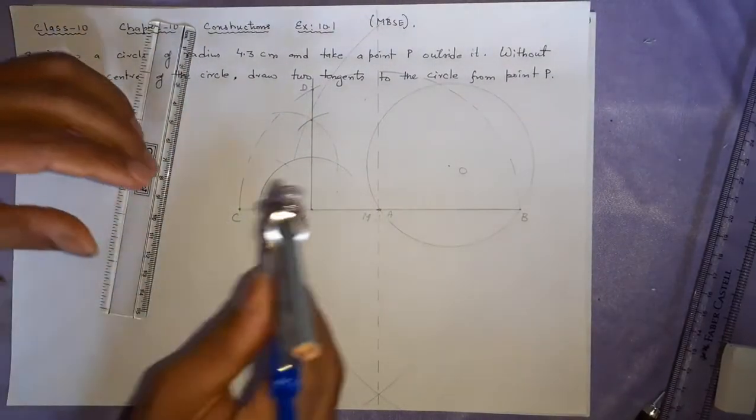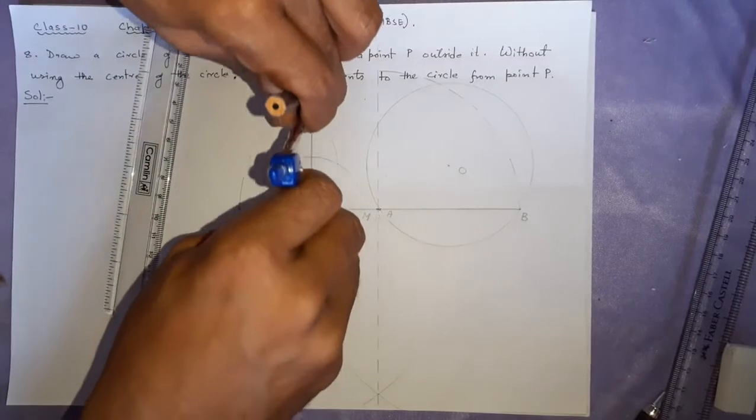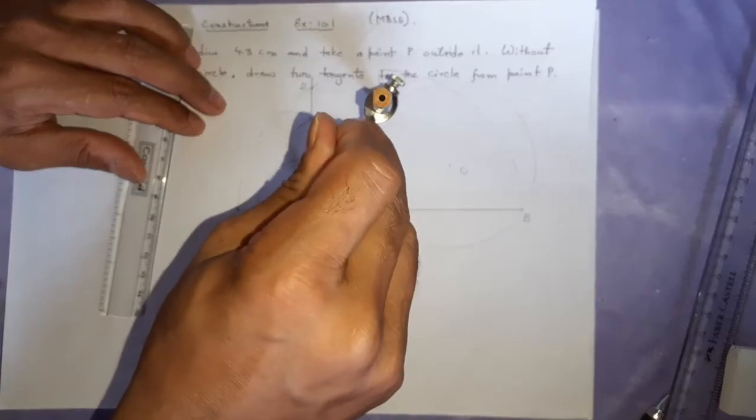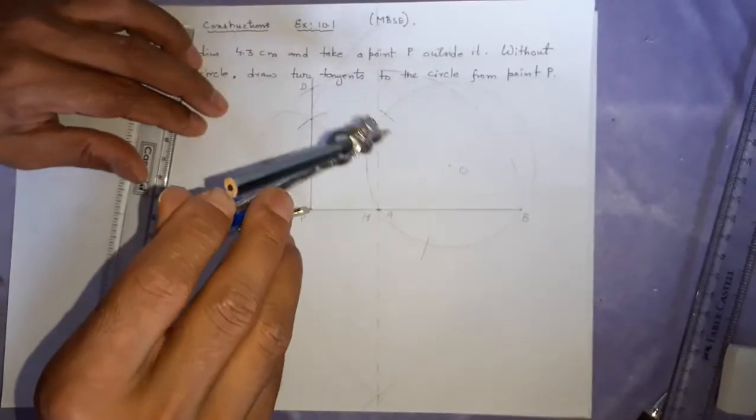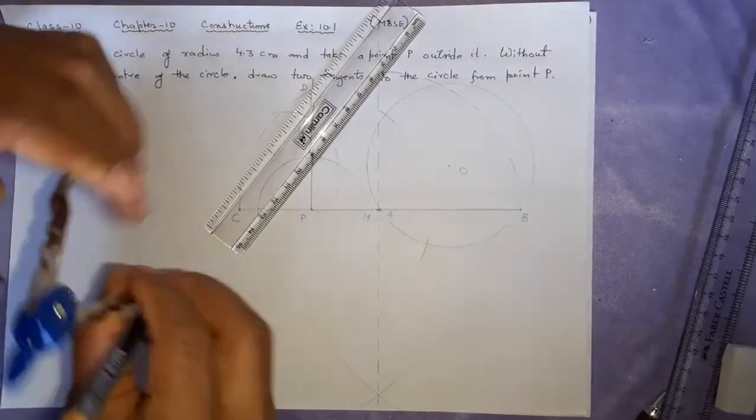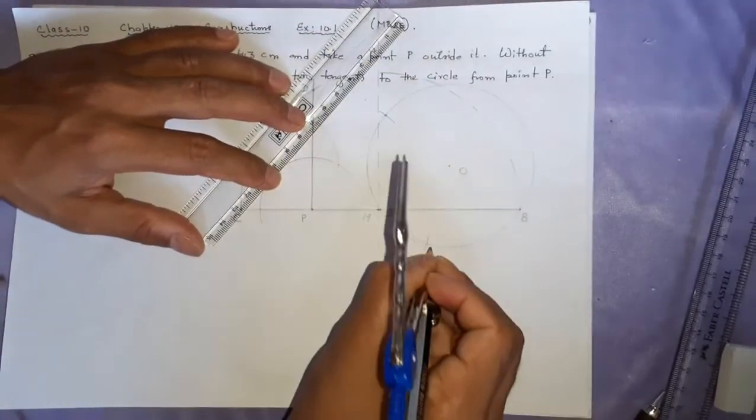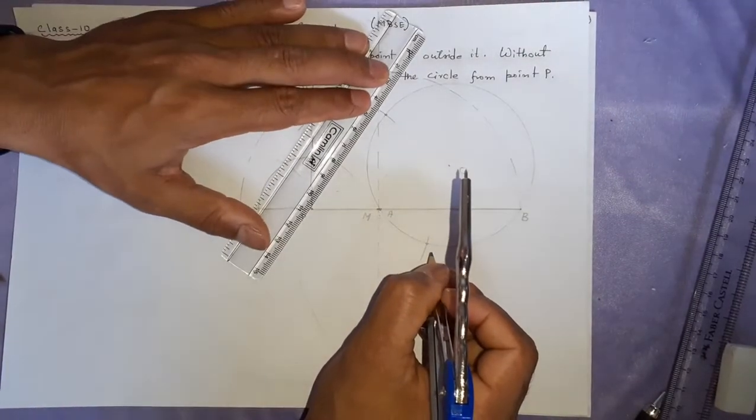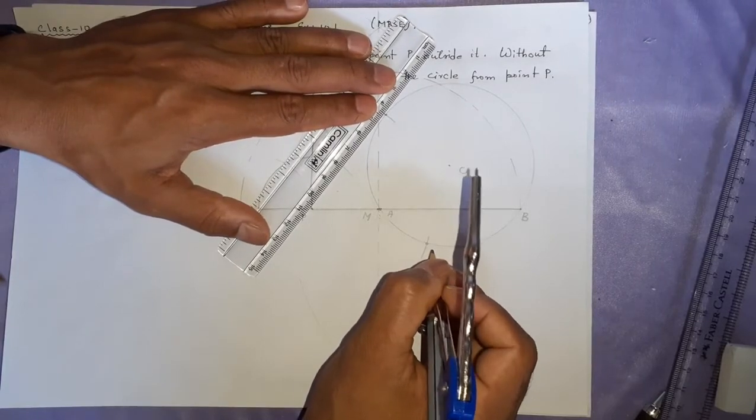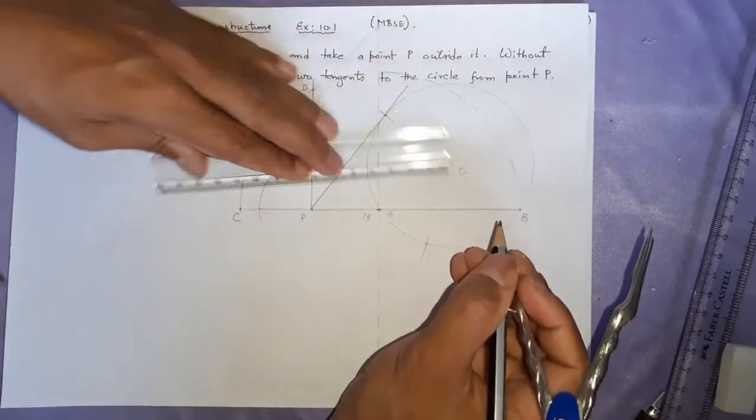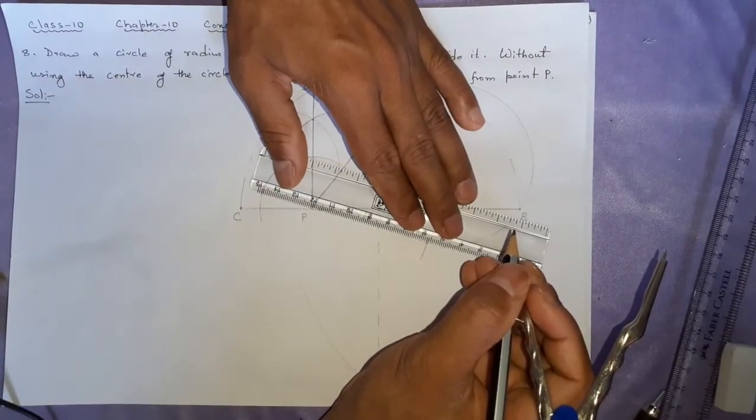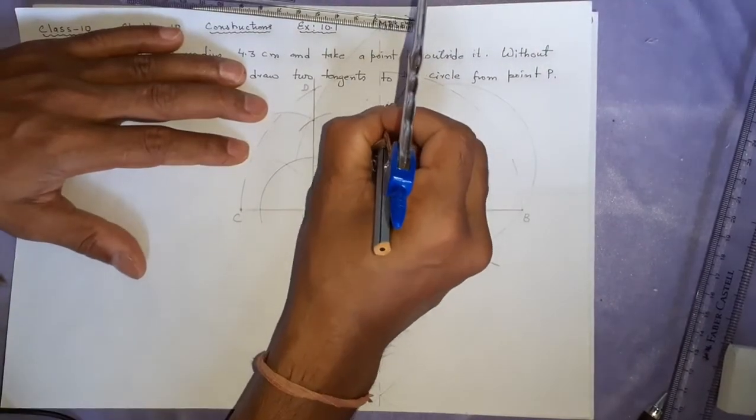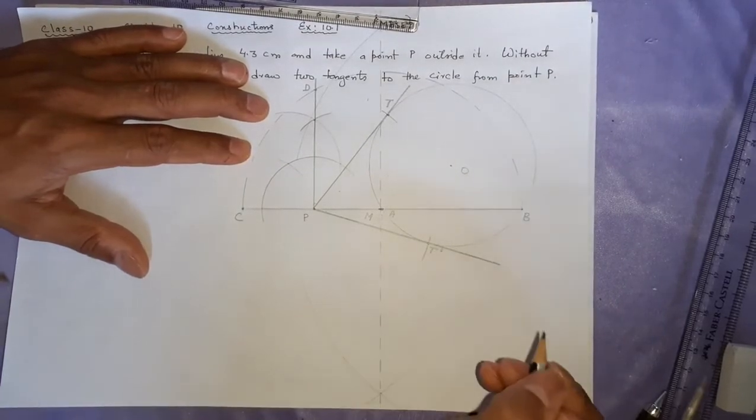Now next step is, you measure this PD and the same amount you are going to use this side. From P and this will be your T. This will be PT dash. So write it T here, write here T dash. Now steps of constructions.